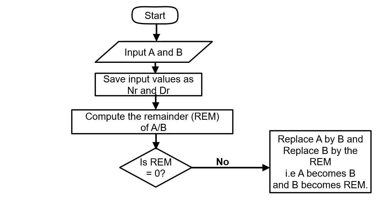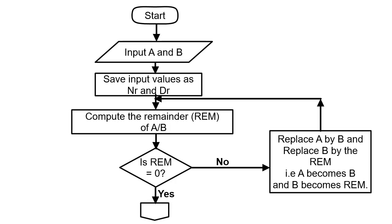This makes a become b and b becomes the remainder. Whatever you have as b now turns into a, which is the numerator, and whatever you have as the remainder turns into b, which is the denominator. You then loop back to the process and repeat down to the decision until you have zero as your remainder.